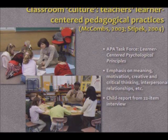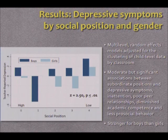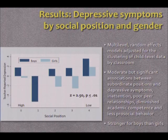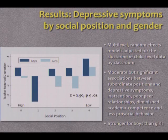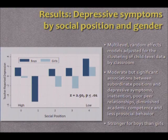When we looked at depressive symptoms by social position and gender — with high social status at one end and low at the other — we used multi-level random effects models to adjust for clustering of child-level data by classroom. We found moderate but significant associations between subordinate positions and depressive symptoms, inattention, poor peer relationships, diminished academic competence, and less pro-social behavior.